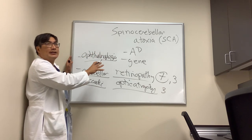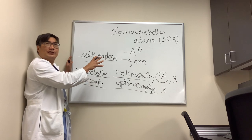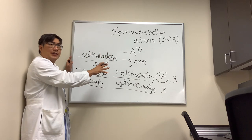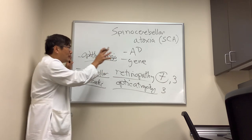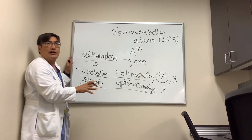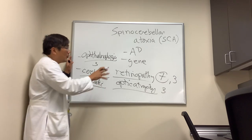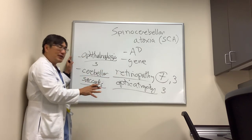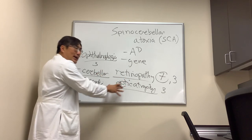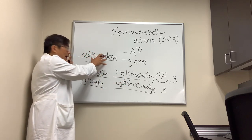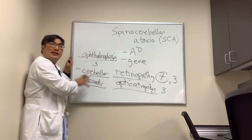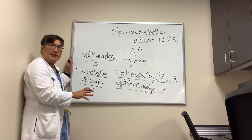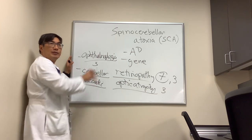When looking at SCAs, you should be thinking about this diagnosis in a patient with a progressive, multi-year history of cerebellar degenerative signs and autosomal dominant positive family history. Ultimately the only way to know the specific type is to test the gene. We will be looking for retinopathy — especially in SCA7 — optic atrophy, ophthalmoplegia, and cerebellar eye signs. This is how we can help our neurology colleagues with the SCAs.